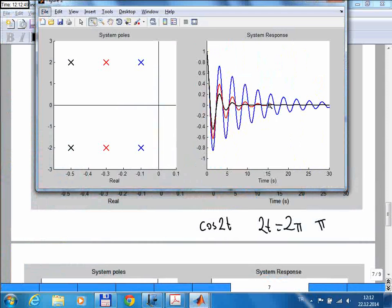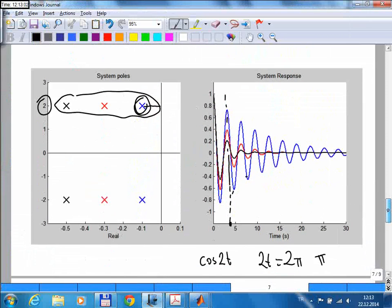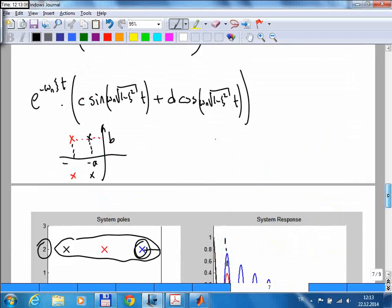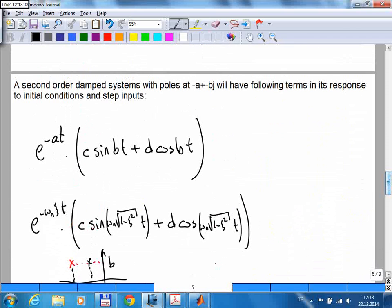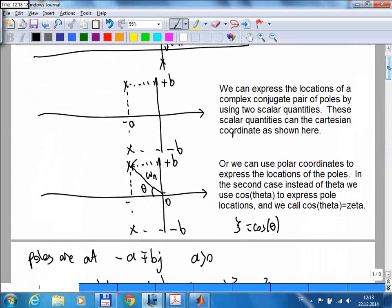And then I told you that instead of using these Cartesian coordinates, we can also express them in terms of omega n and zeta. And that has other benefits. Well, first of all, that zeta we defined is known as the damping ratio.